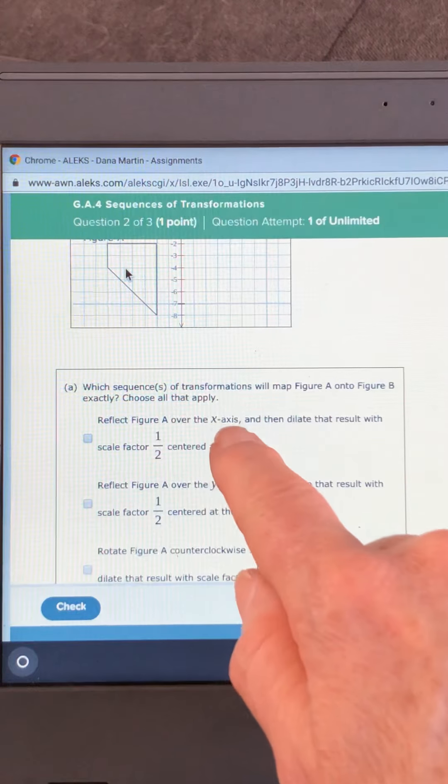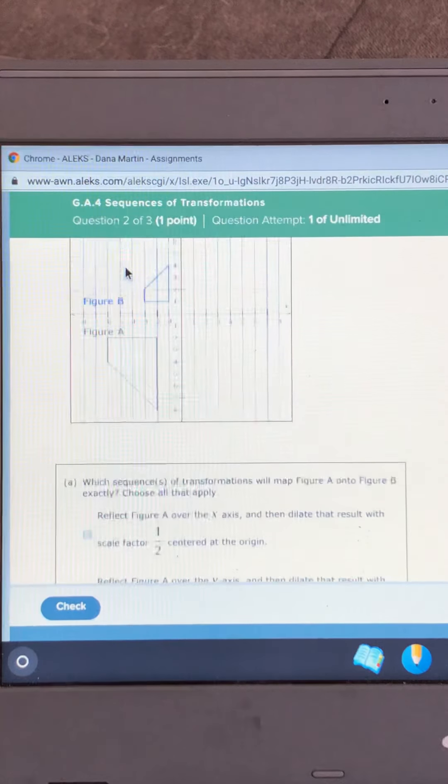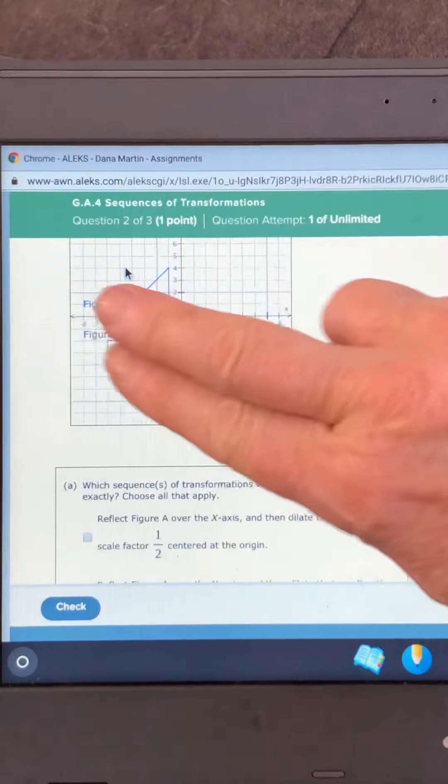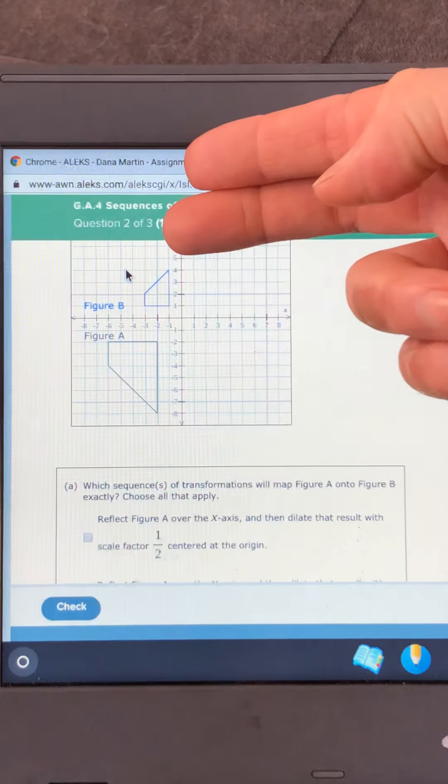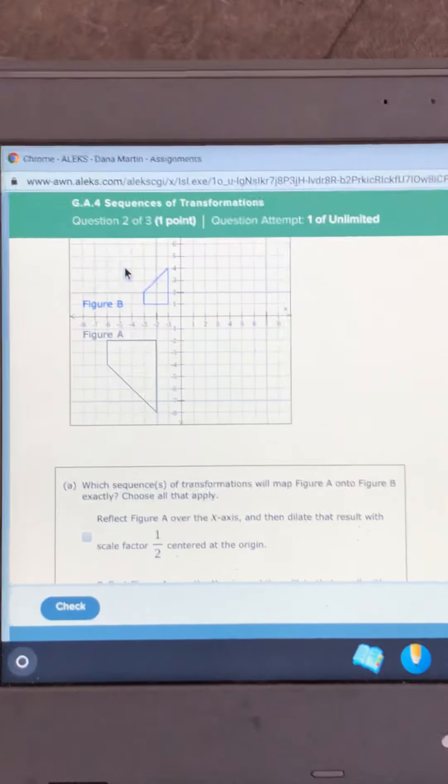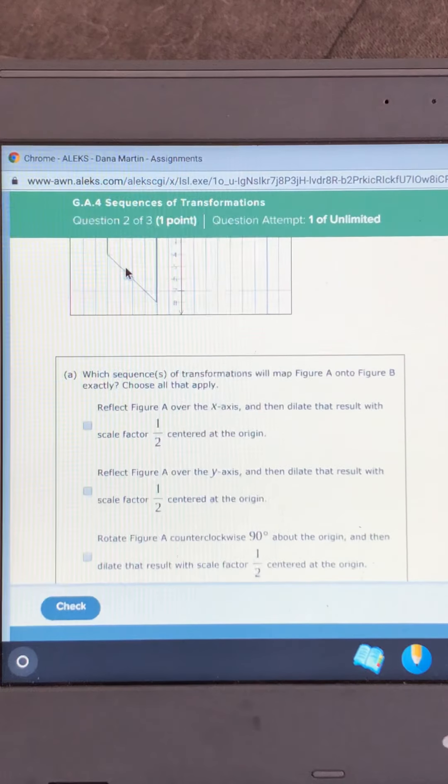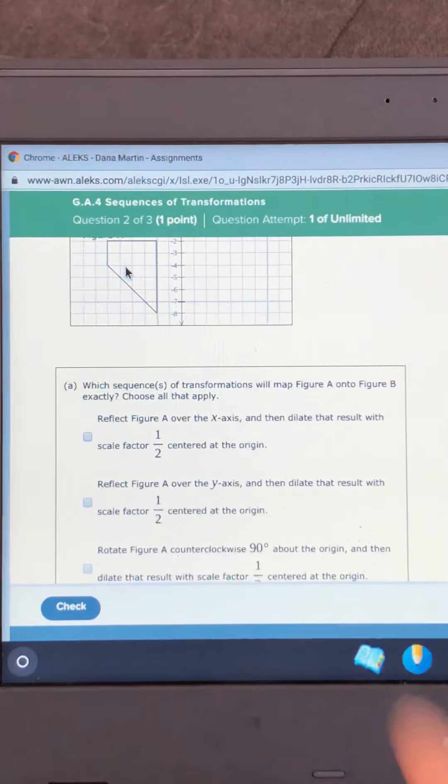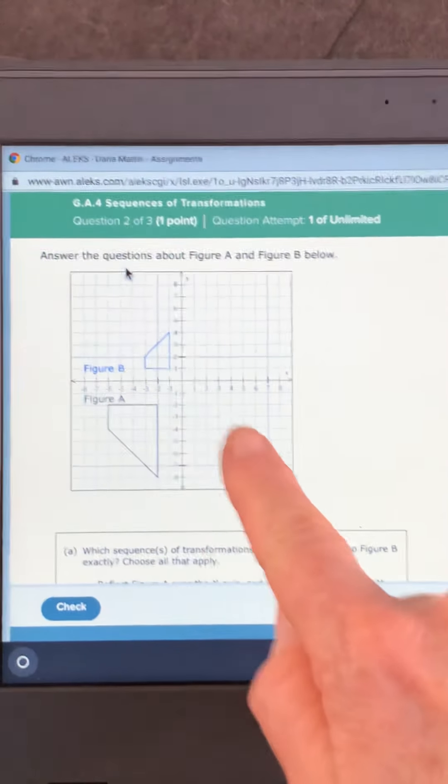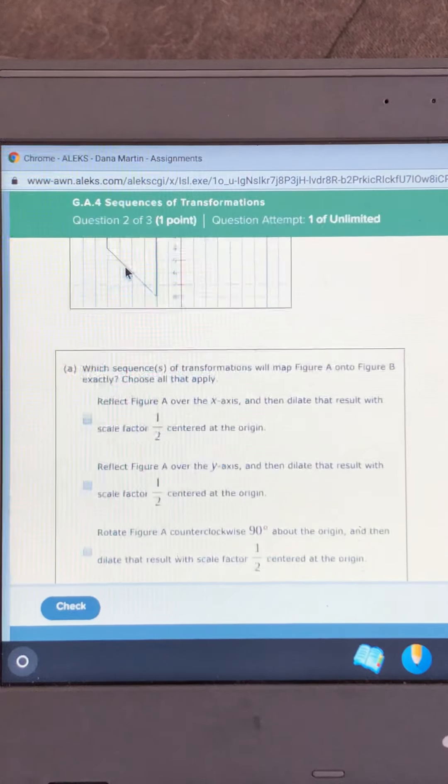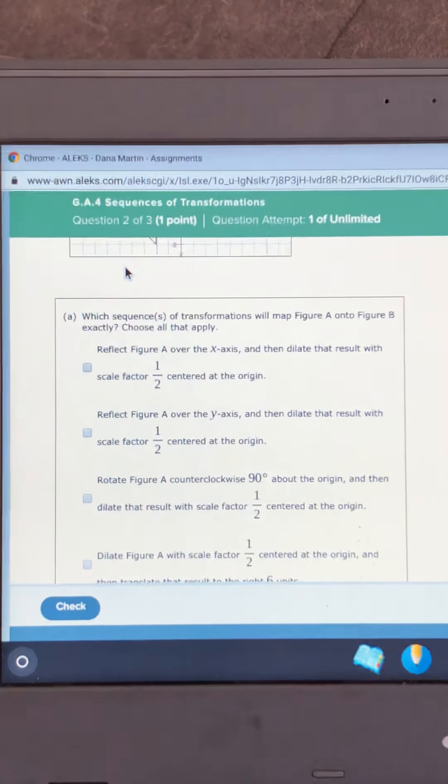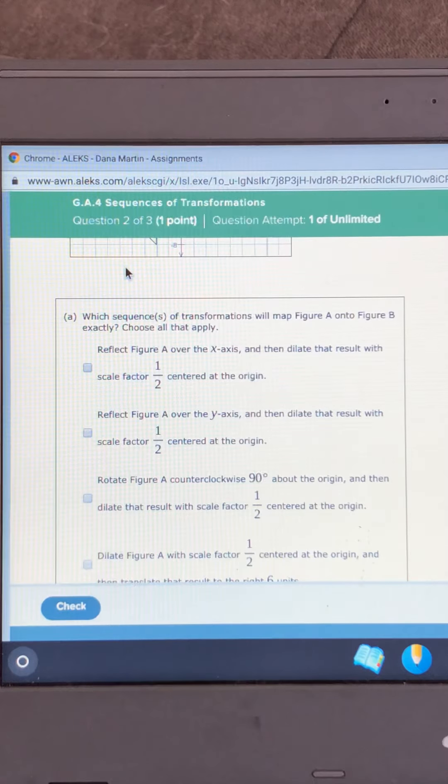So they're saying reflect over the x-axis and then dilate. So reflect over the x-axis from down to up and then dilate with a scale factor of one half. And that I'm gonna say is the answer but I'm just gonna check. This says reflect over the y-axis. Nope. That means going over there.